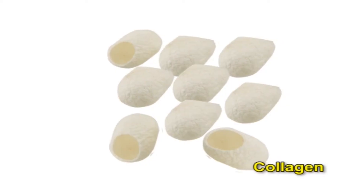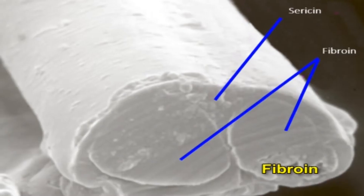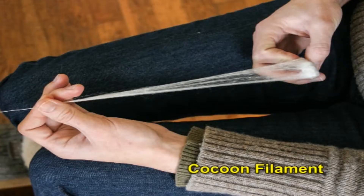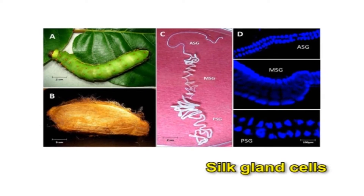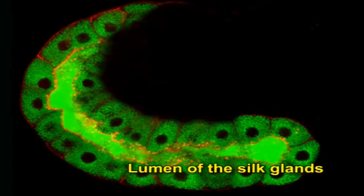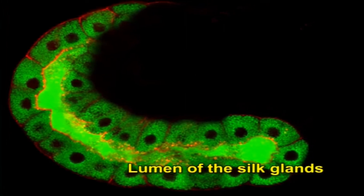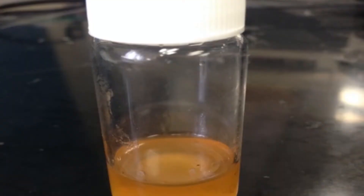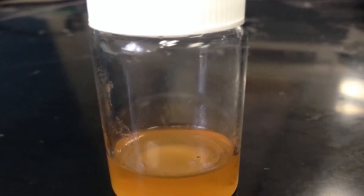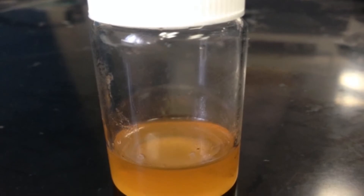Silk protein is a kind of protein like collagen, elastin, keratin, fibroin, etc., and is an essential constituent of cocoon filament. The silk fiber protein is synthesized by silk gland cells and stored in the lumen of the silk glands. Subsequently, it is converted into silk fibers. When the silkworm secretes the liquid silk during spinning, it passes through the anterior gland and is expelled out through the spinneret opening.